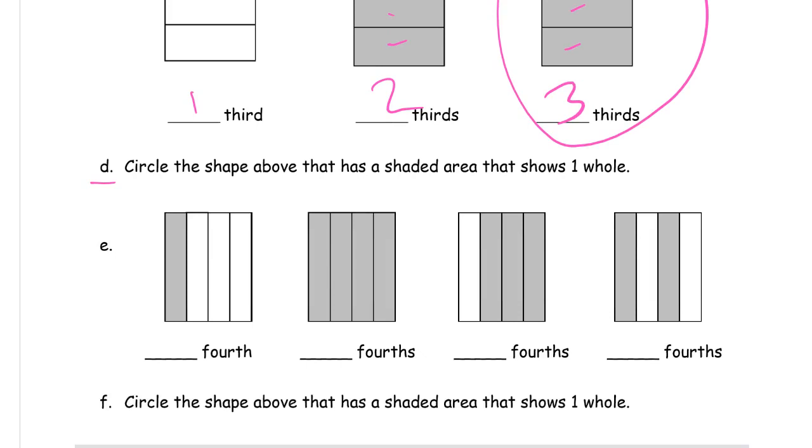And then here's E, just like the others. One fourth is shaded. This has one, two, three, four fourths shaded in. This one has three fourths, and this one has two.